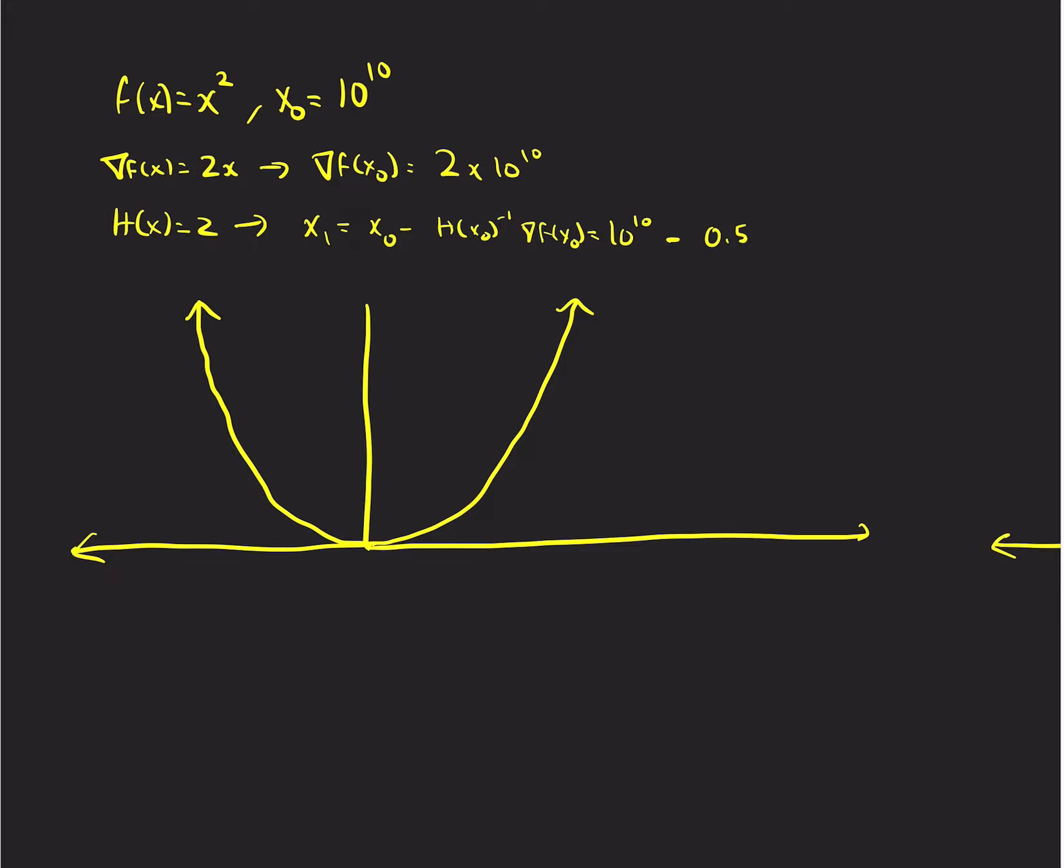And so with gradient descent, if I choose 10 to the 10th, we have to do an Armijo condition thing. And we pretend we don't know this a priori. Then we have to choose step length and it might take 100 iterations. We'll get there, but it might take us 100 iterations.